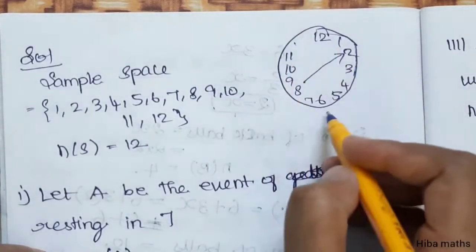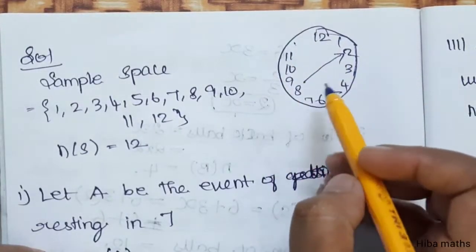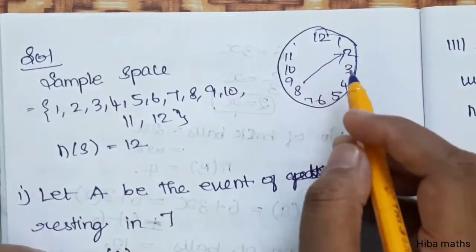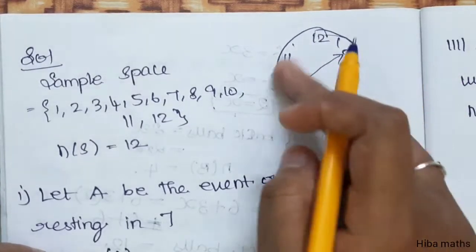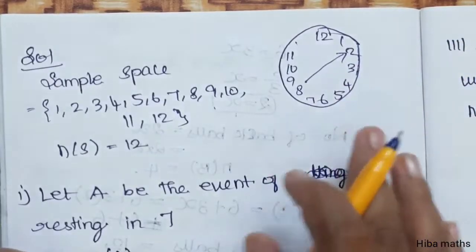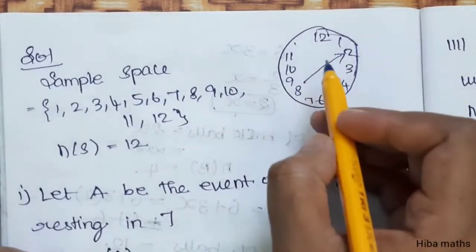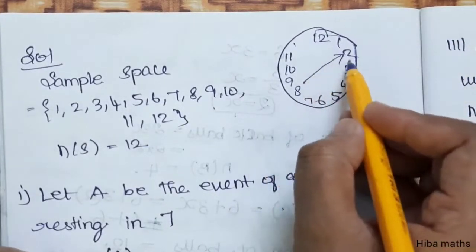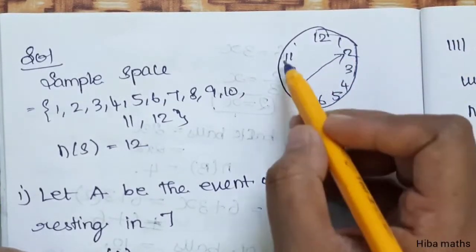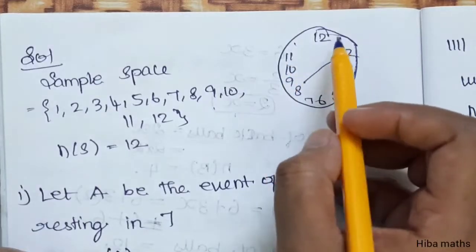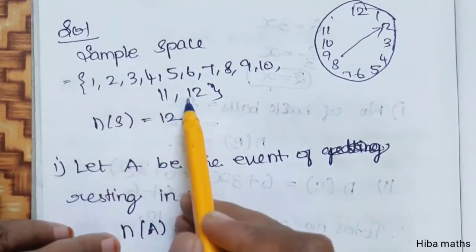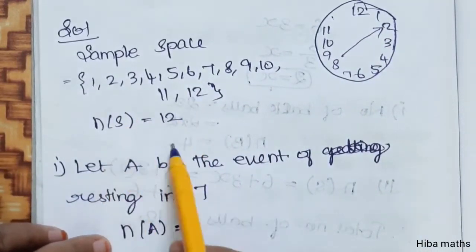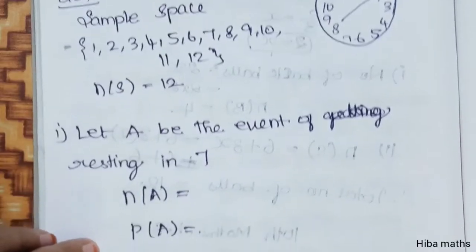So, in the diagram in the book we have a spinning arrow. If we spin the arrow, it will point to a number. So, in the sample space there are numbers 1, 2, 3, 4, 5, 6, 7, 8 up to 12. So, the sample space contains numbers 1 to 12, and n of S equals 12.